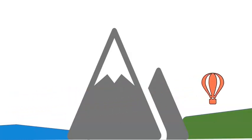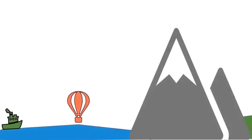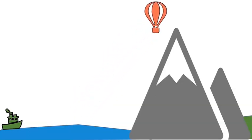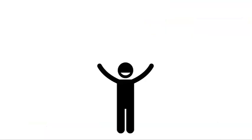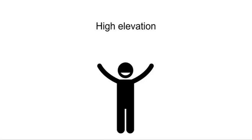Let's imagine our hot air balloon floats over to the plains on the other side of the mountains. The plains are not very far above sea level, so we would say that the plains have a low elevation. How would you show a low elevation with your body? Are you sitting or laying on the floor? Moving your body down low is a great way to show low elevation. Now imagine we are in our hot air balloon and we float to the top of the mountain — we are up really high! How would you move your body to show high elevation? Are you standing as tall as you can with your arms up really high? Awesome!